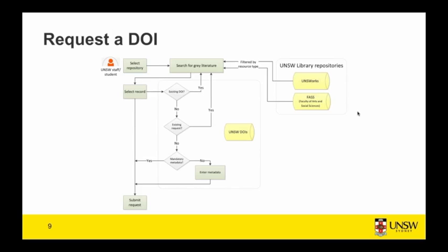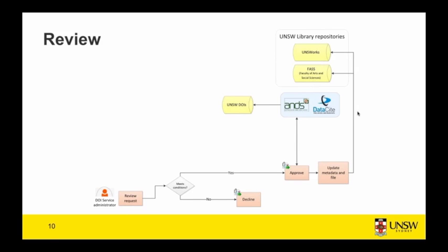These are the workflows we're following. For all users, they go into the tool, select their repository where the resource is — most commonly UNSW Works — search for their record, and select it. The system checks if a DOI already exists or if there's an existing request, and also checks if the mandatory metadata is already held by the system.